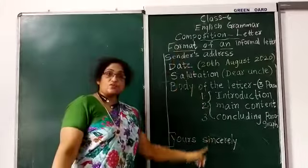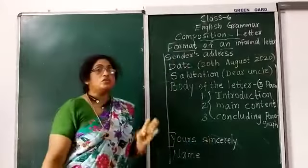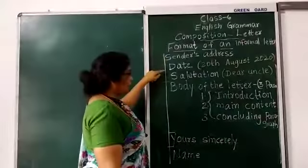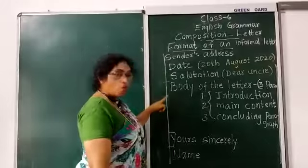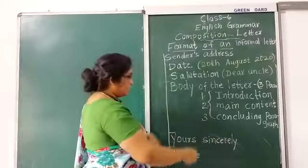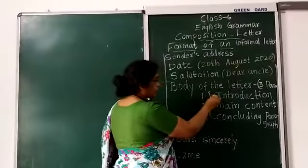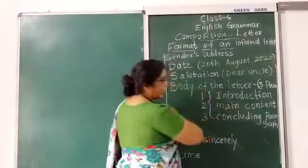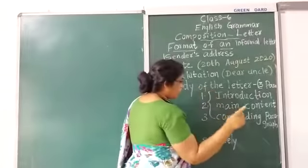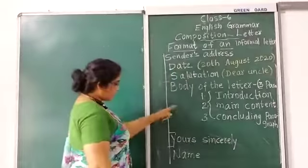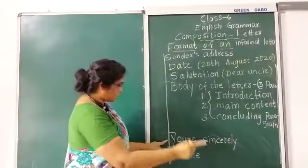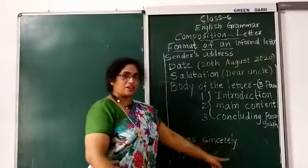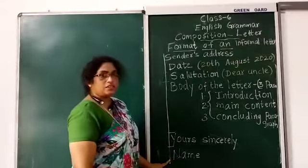An informal letter must have six things. First, the sender's address. Then the date. Then the salutation. Then the body of the letter, which should have three paragraphs: the first is the introduction, the second is the main content, and the third is the concluding paragraph. After the body, you write 'Yours sincerely,' 'Yours friendly,' or 'Yours lovingly,' followed by your name.